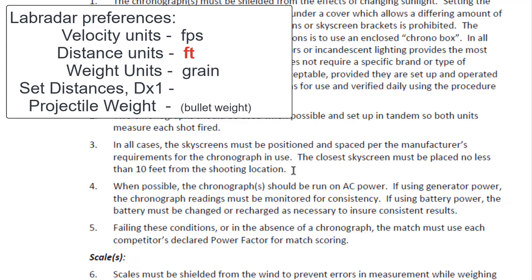And let me tell you what it's not telling us. It's not telling us that the Lab Radar unit needs to be 10 feet away from the muzzle of the firearm. The Lab Radar unit must be set up according to the manufacturer's instructions. When you read those, you would see that the muzzle of a firearm is generally 6 to 12 inches away from the unit. So what this 10 feet is referring to is one of the preferences you set, called set distances.